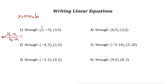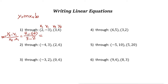Let's choose the first point as x1, y1 and the second as x2, y2 — it doesn't matter which you choose. So y2 is 4, y1 is negative 3, x2 is 3, and x1 is 2. That gives us 4 minus negative 3 over 3 minus 2, which is 4 plus 3 over 1, so the slope is 7.